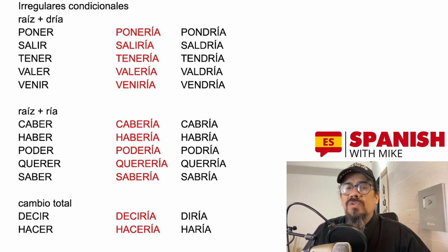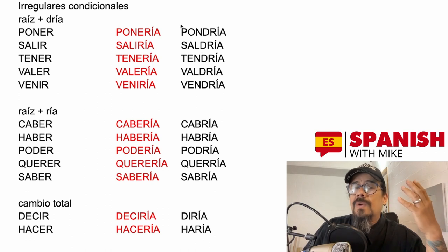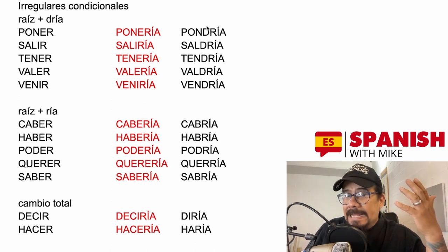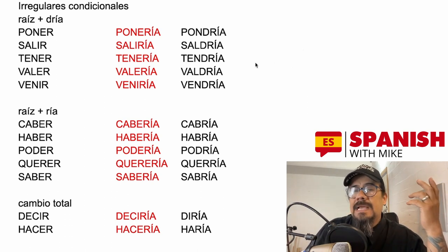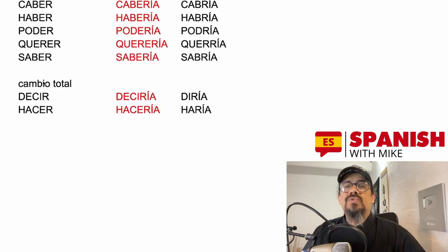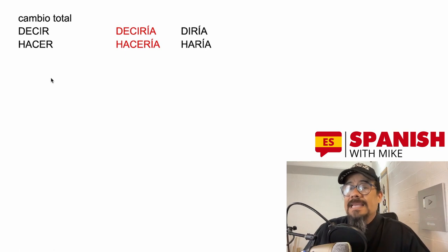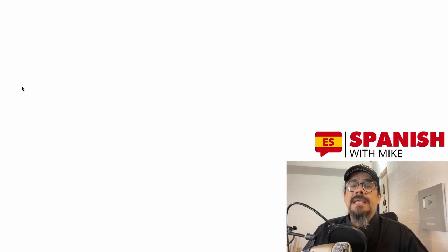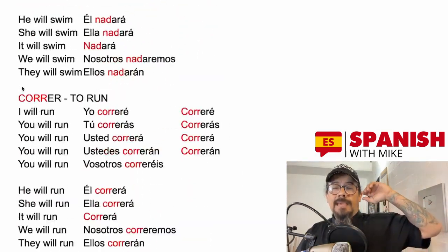Another group of irregular conditional verbs uses the root plus -iría: caber → cabría, haber → habría, poder → podría, querer → querría, saber → sabría. And two more change the word more drastically: decir → diría (essentially just the first letter of the root), hacer → haría (the first two letters). We have now learned how to conjugate regular verbs across different tenses including the conditional.